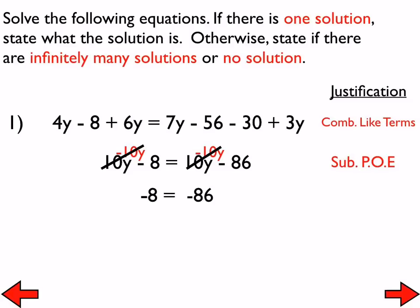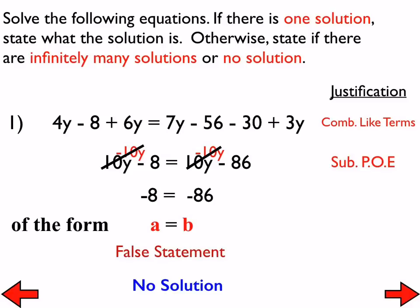What does no solution mean? Lucas said it can't be solved — there is not a value you can substitute in for y and get a true statement. No matter what you substitute in, you will never get a true statement. The false statement is one way of helping you determine no solution after the variables cancel out, and we notice it is of the form A equals B, as the 8th grade standard says.